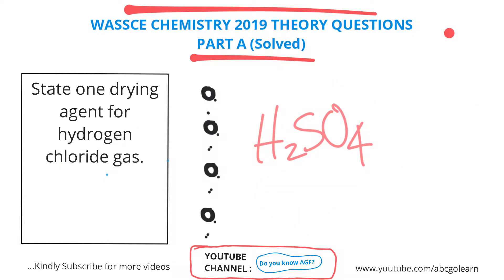The drying agent for hydrochloric gas is concentrated sulfuric acid — concentrated H₂SO₄.